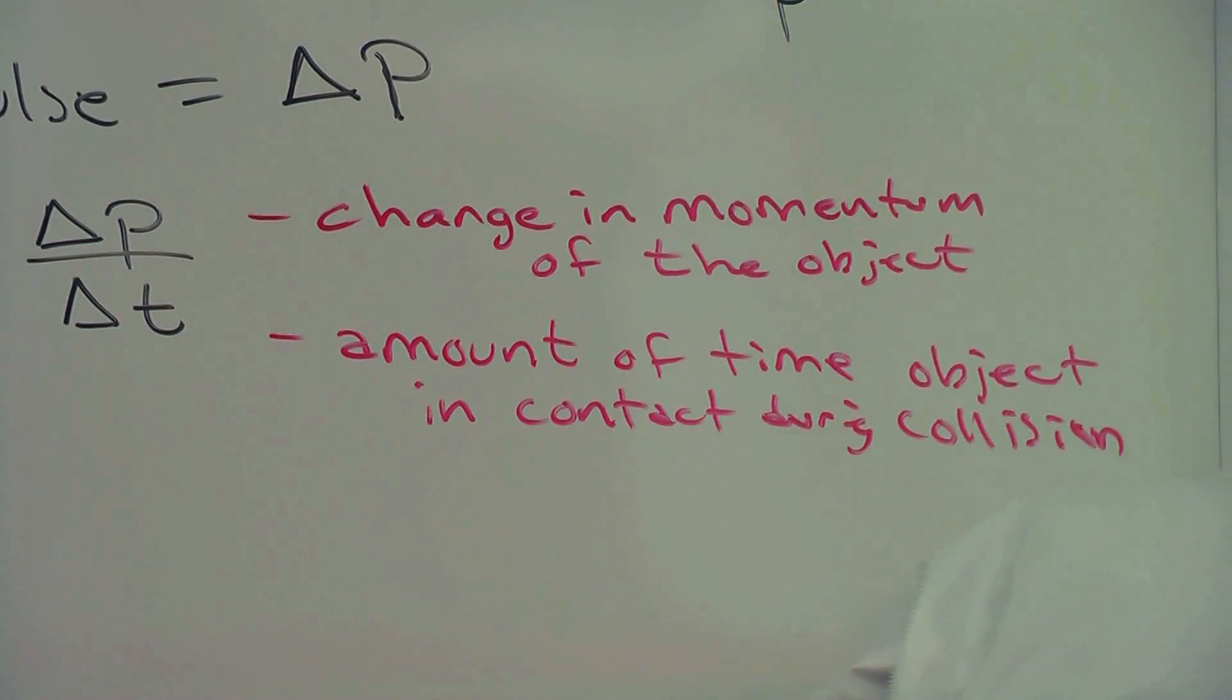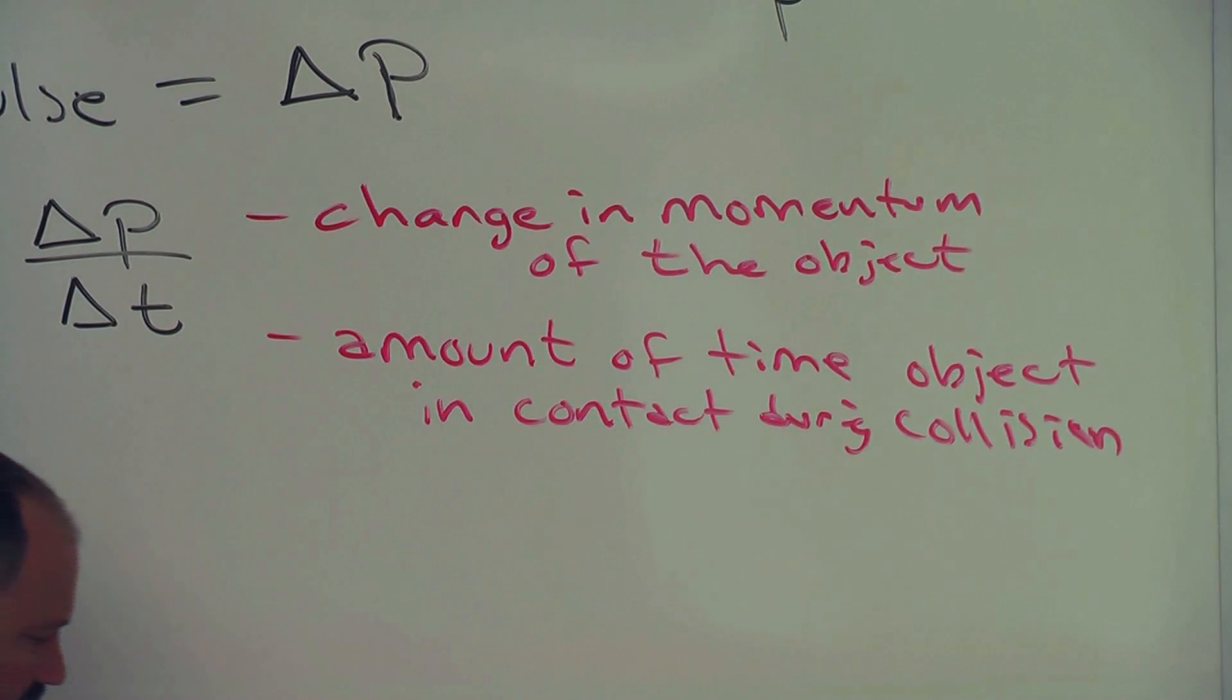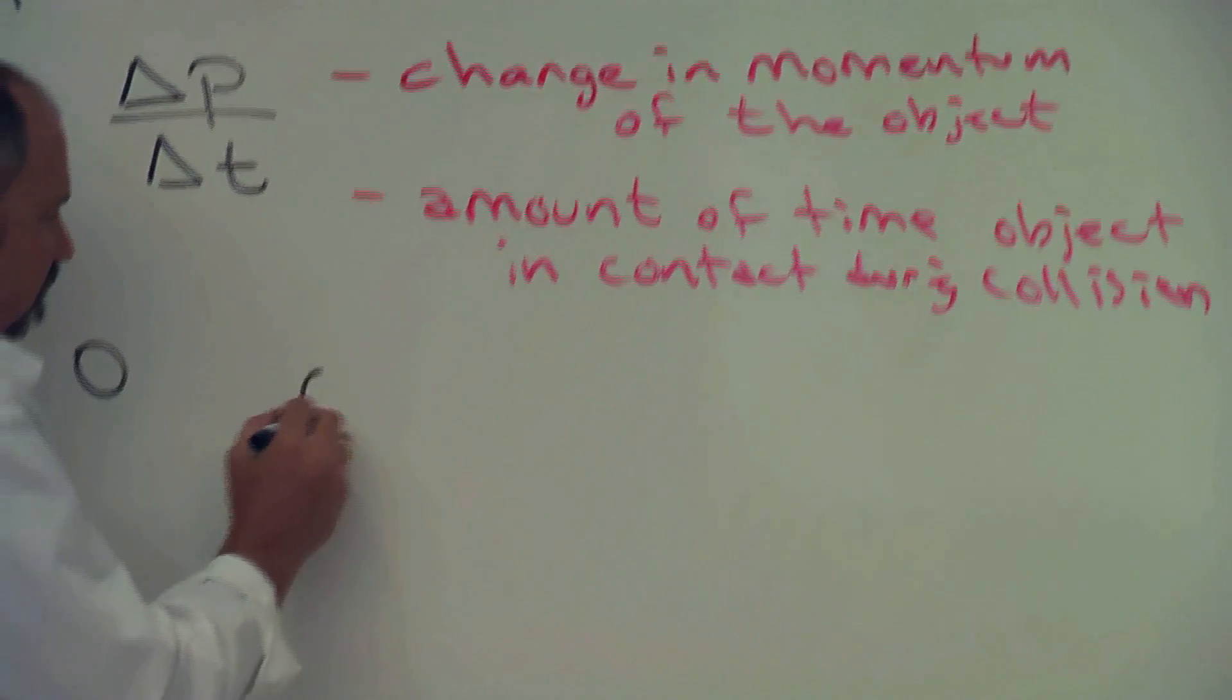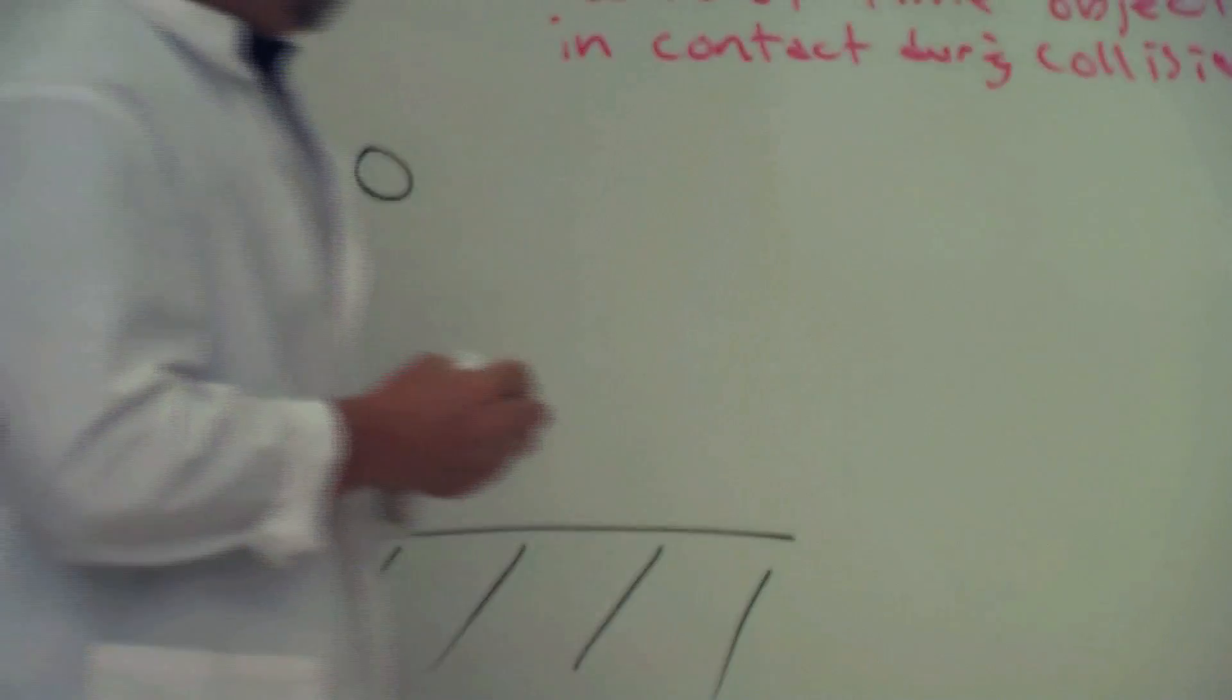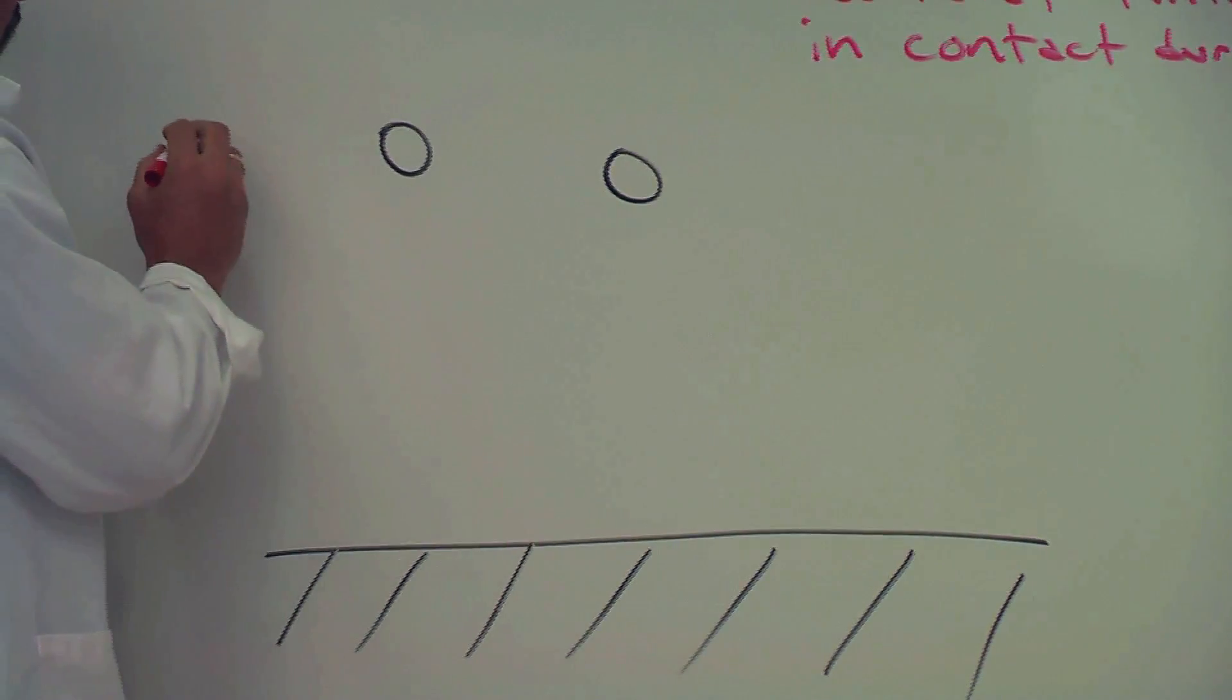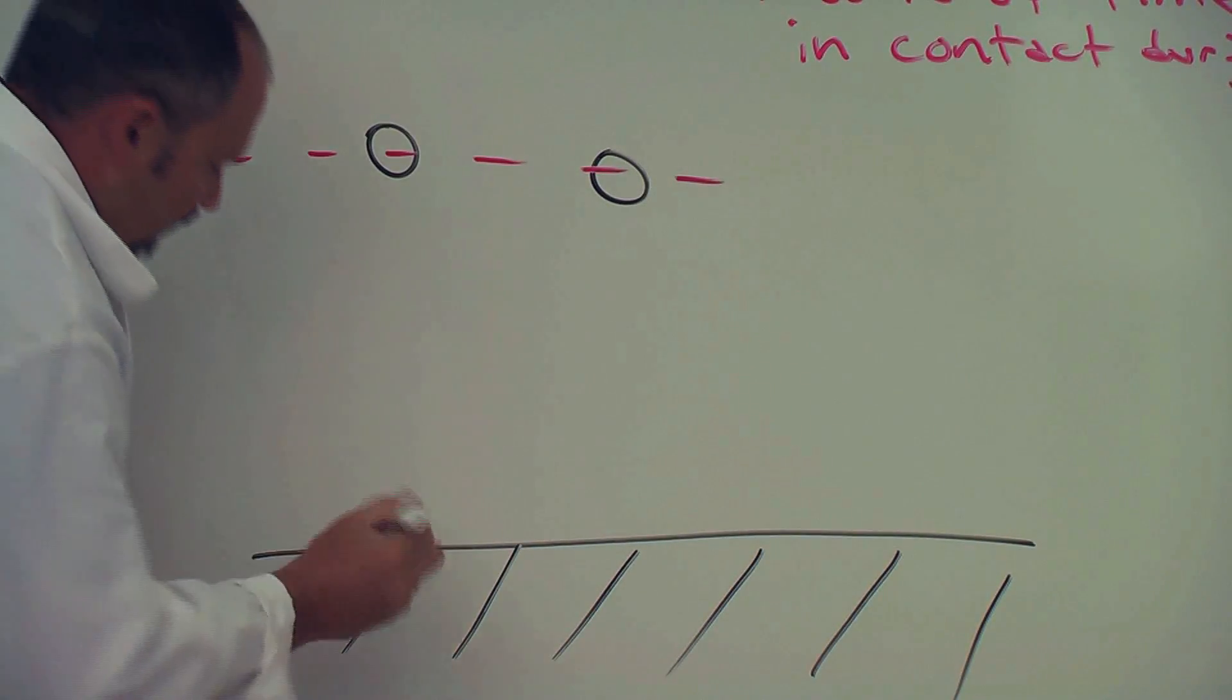Well if we drop them from the same height using your knowledge of energy conservation or kinematics we know that they will hit the table with the same speed. And I'll call that speed v. So they drop from here and they both land here.